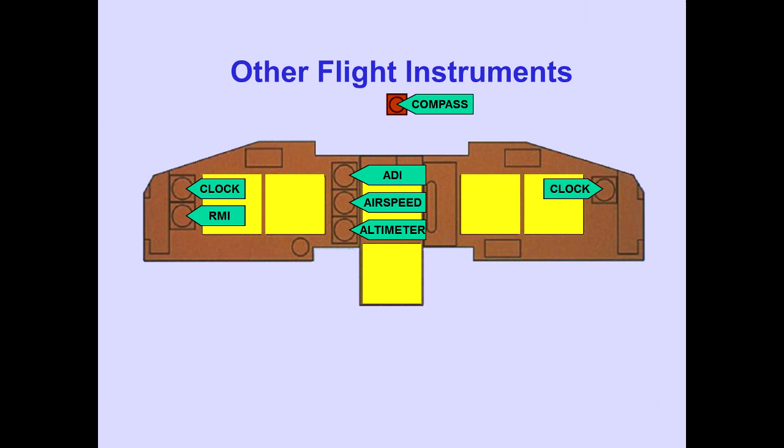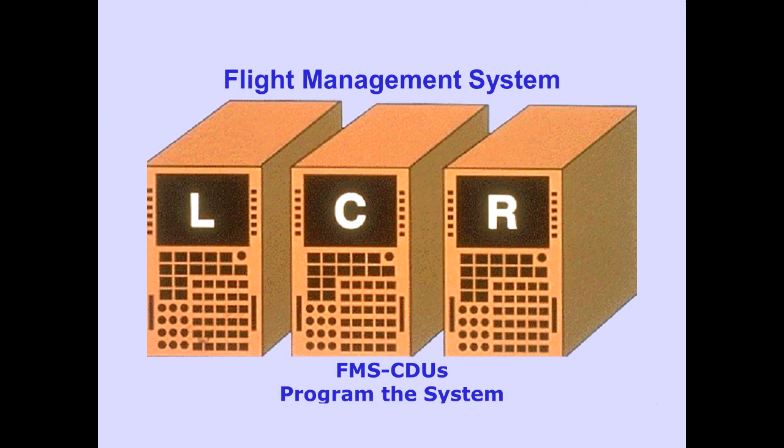The flight management system, or FMS, is the key to the airplane's navigation system. The flight crew uses three FMS control display units, or FMS CDUs, to program the system.